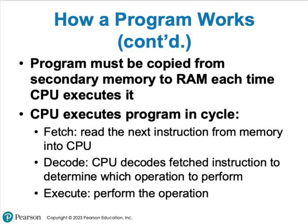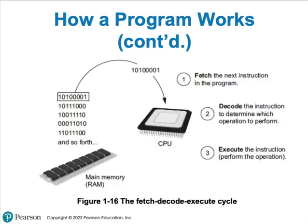A program must be copied from your hard drive or secondary storage into RAM and executed. This is the cycle the CPU goes through: it fetches — reads an instruction — then decodes that instruction, which determines what operation the CPU will perform, then executes — actually performing the operation. It continues doing that over and over, billions of times a second, to perform whatever task it's being asked to complete.